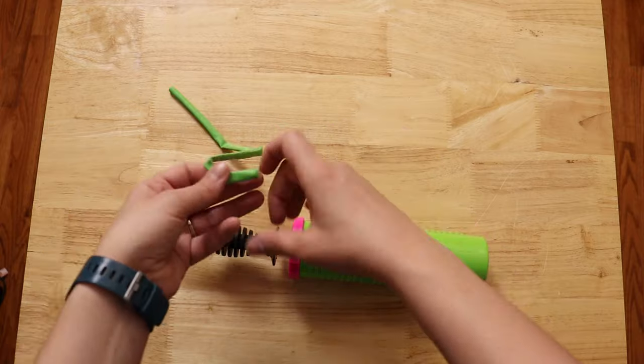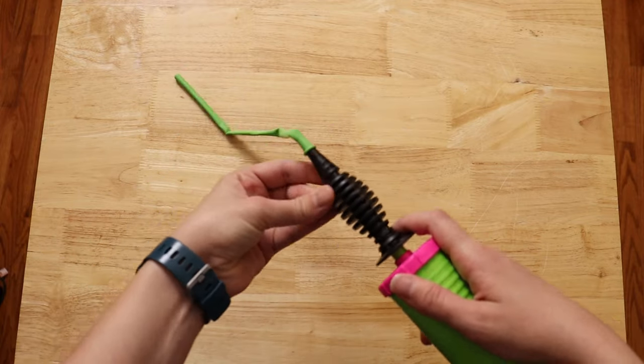To make a rose, you're going to need one lime and one pink 260 balloon, a hand pump, and a pair of scissors.